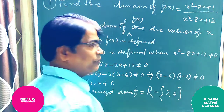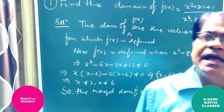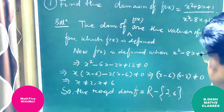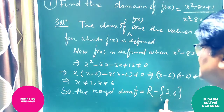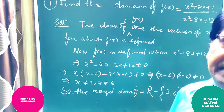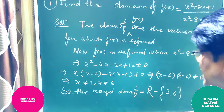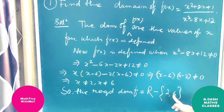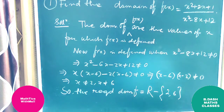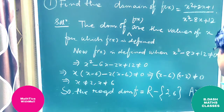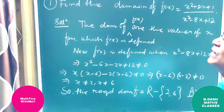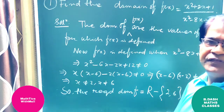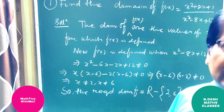So we have to choose the entire real number set for the domain, excluding 2 and 6, by which the function will be defined. Therefore, the domain of the function f is equal to ℝ minus {2, 6}. This is the answer for this question.